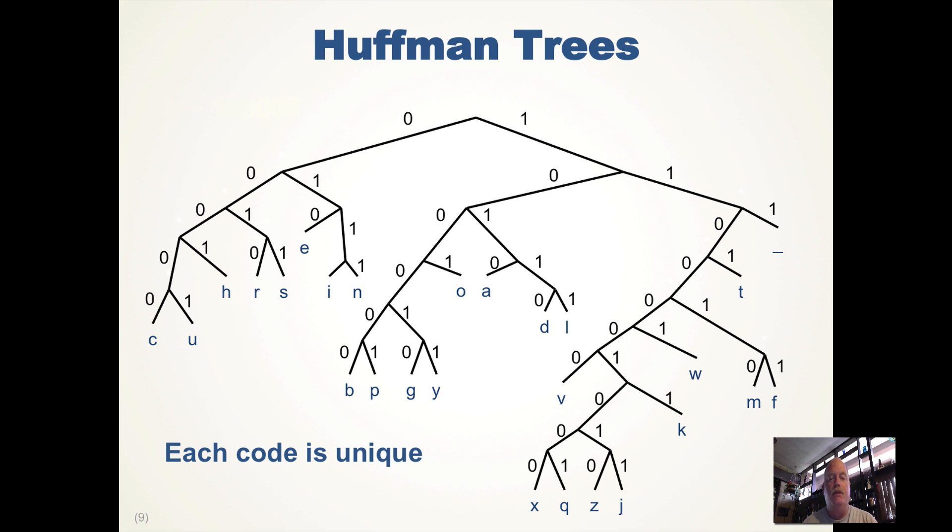Each code is unique because each leaf has a unique traversal through the tree, so we don't have any duplicates. We can easily encode and decode the characters because they are unique and there's only one possible way to get to each character.